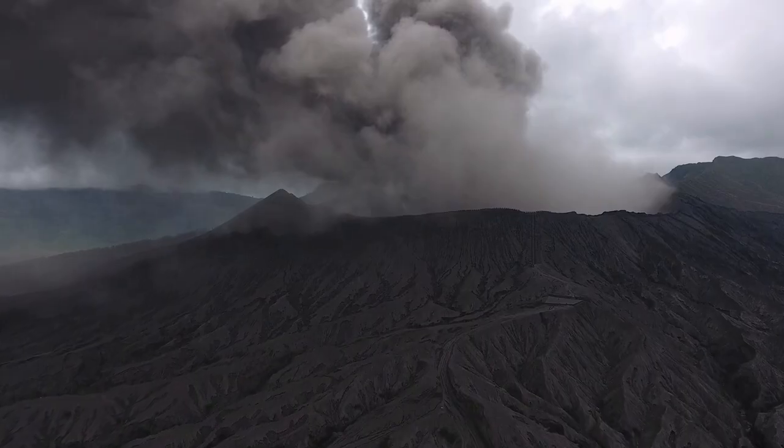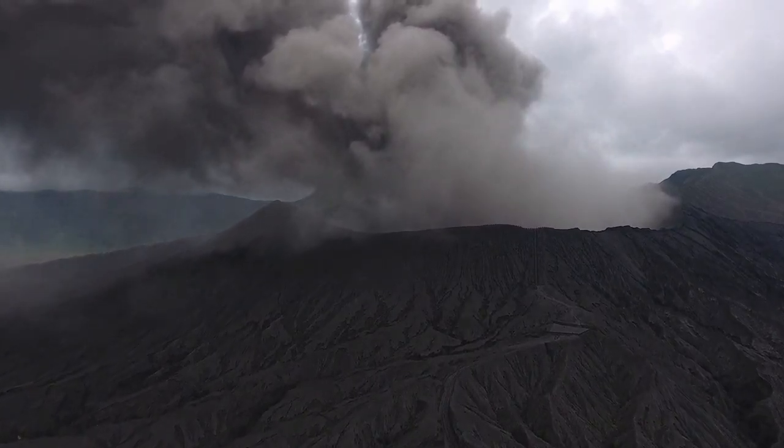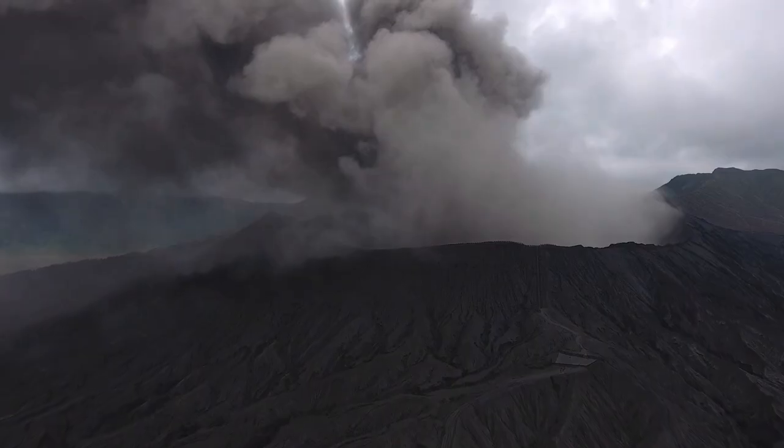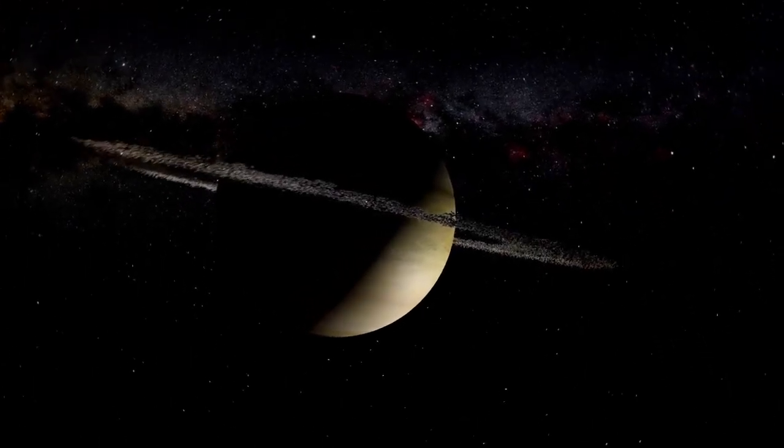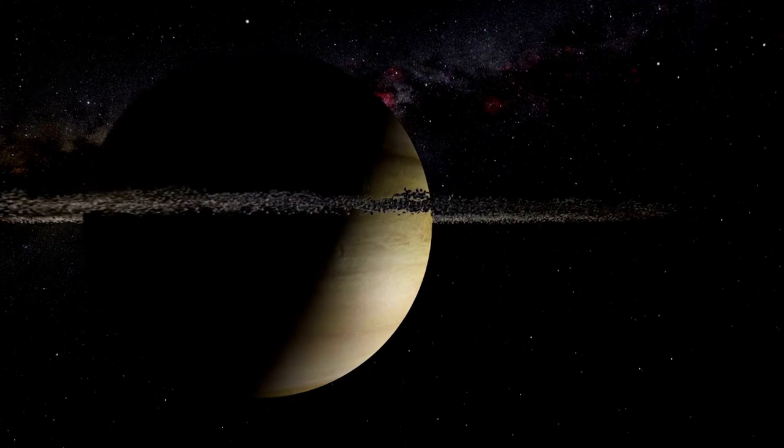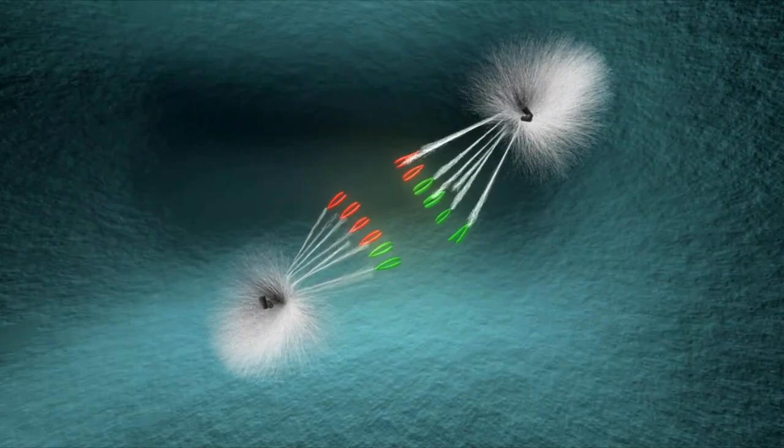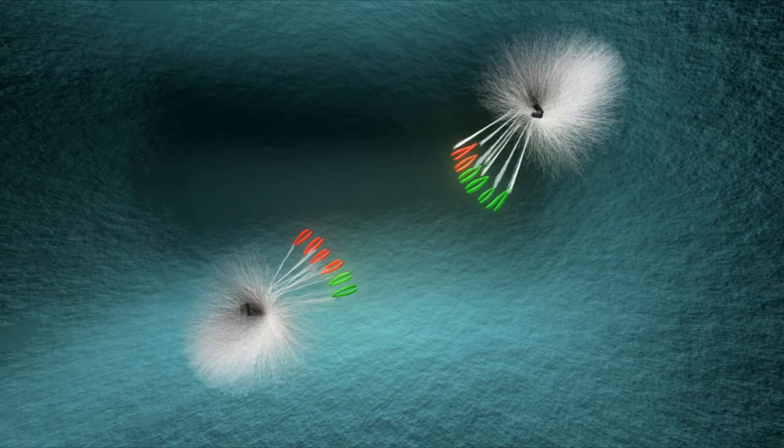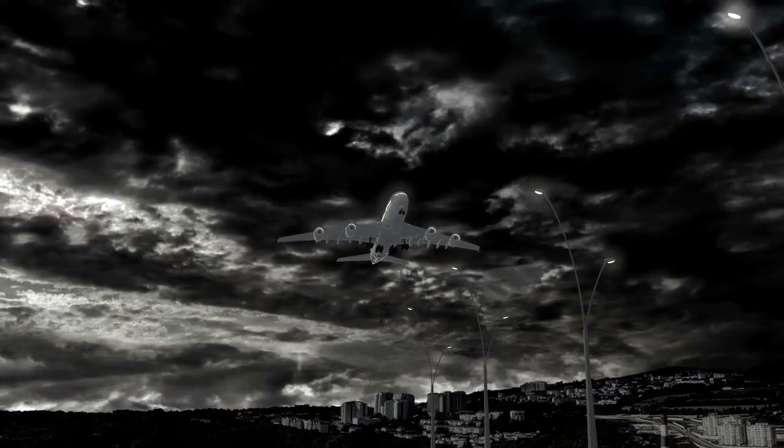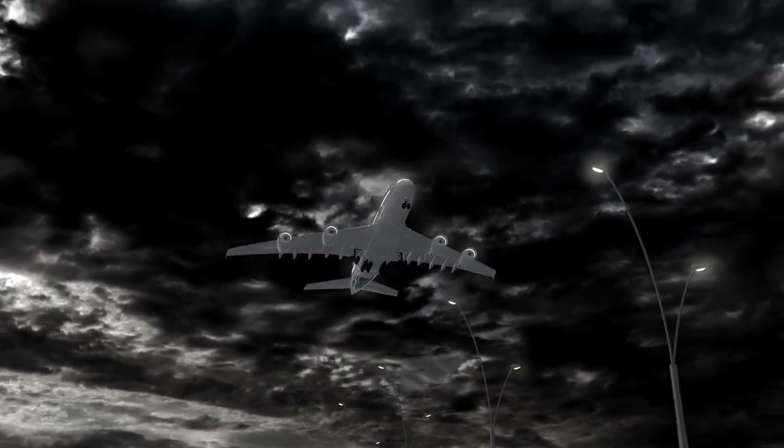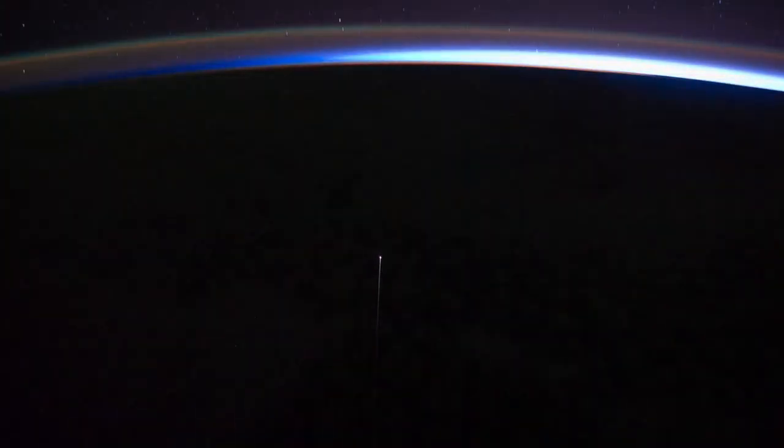Eventually, both Voyagers crossed a crucial threshold, the heliopause, where the pressure of the solar wind is balanced by the interstellar medium. This invisible boundary represents the outer edge of the Sun's influence, a region where particles and magnetic fields from the rest of the galaxy begin to dominate. Voyager 1 entered this region in 2012, followed by Voyager 2 in 2018, officially marking humanity's first presence in interstellar space. Their instruments have since provided the first direct measurements of this uncharted realm, revealing variations in cosmic rays, magnetic fields, and particle densities that are reshaping scientists' understanding of the galaxy's structure and the protective bubble formed by our Sun.